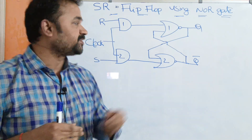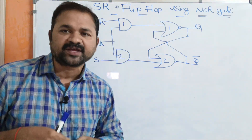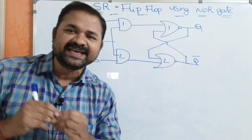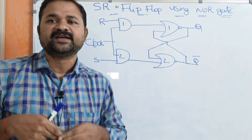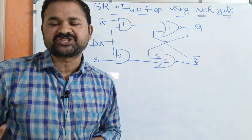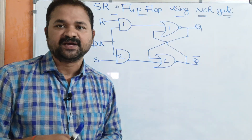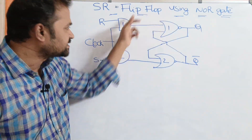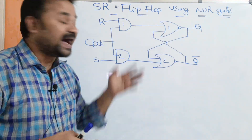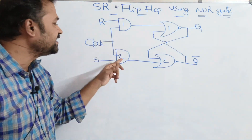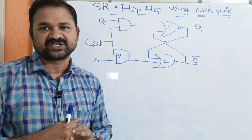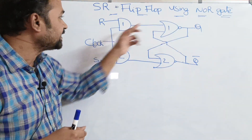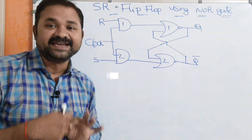Now let us discuss about SR flip-flop using NOR gate. In the previous video we have seen about SR flip-flop using NAND gate. There, SR flip-flop is a combination of SR latch and we require two more NAND gates. But here SR flip-flop is also a combination of SR latch using the NOR gate, and instead of NAND gates here we require AND gates. In NAND gate implementation we require two more NAND gates, but in NOR gate implementation we require AND gates.